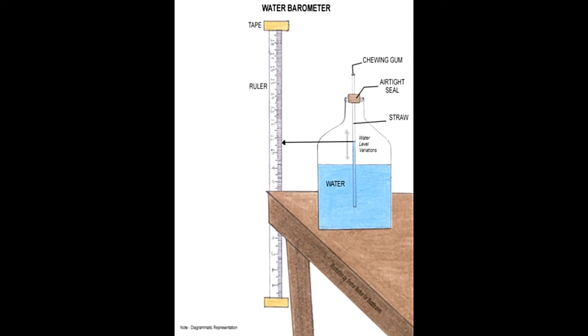The changes in measurements on the scale of a water barometer determine the changes in the weather, and these changes are visible when the water in the straw rises or falls. Higher the water level, lower the atmospheric pressure.